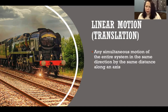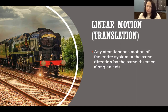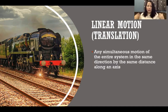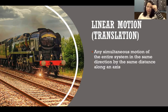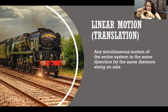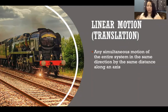The human body doesn't do any linear motion as a whole body unless we are in a train, a car, or on a moving sidewalk or something like that. Individual parts of the body can translate — like we can have translation of one vertebra on top of another, just the movement of the whole vertebra on top of the next one.